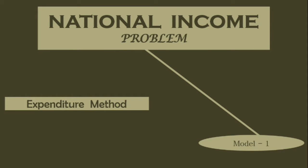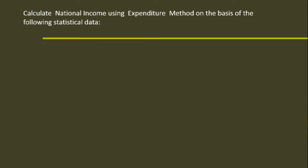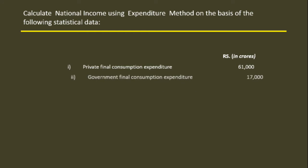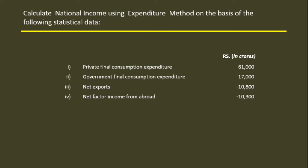Expenditure method is yet another method to compute national income. Let us solve a problem to understand it better. Calculate national income using expenditure method on the basis of the following statistical data. Values are given in crores: Private Final Consumption Expenditure – 61,000 crores, Government Final Consumption Expenditure – 17,000 crores, Net Exports – 10,800 crores, Net Factor Income Earned Abroad – 10,300 crores.